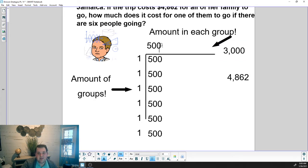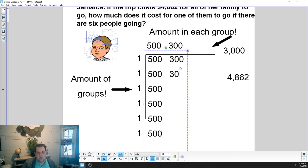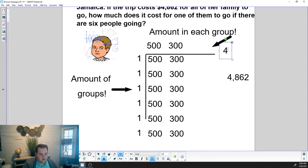You should have entered something into PlayPosit now and we're going to continue so you can check your thinking. I know that's $3,000. I'm going to put $300 more into each group. Putting that into each of my groups, I'm going to have $1,800 more in my array. So $3,000 plus $1,800 takes me to $4,800.